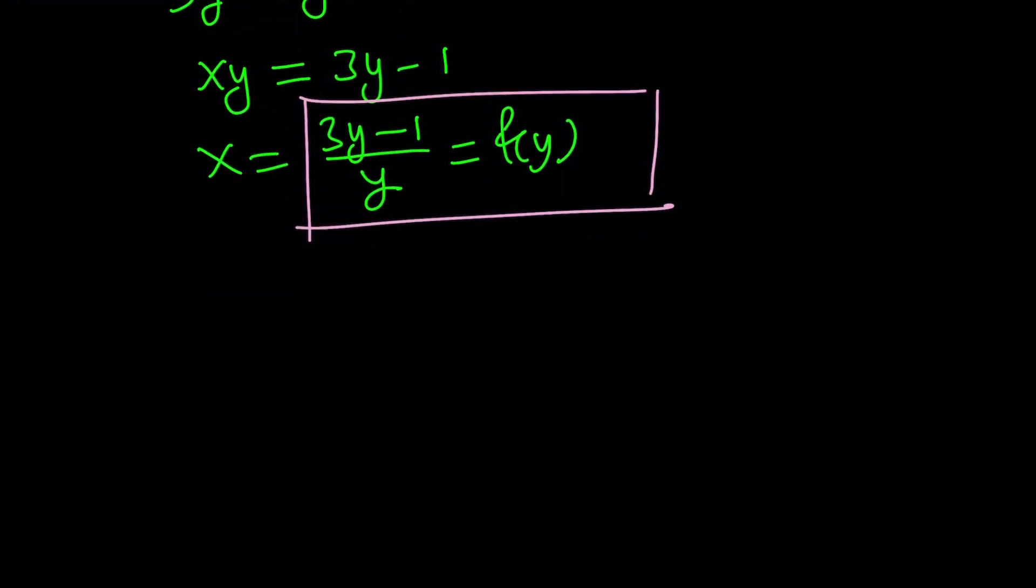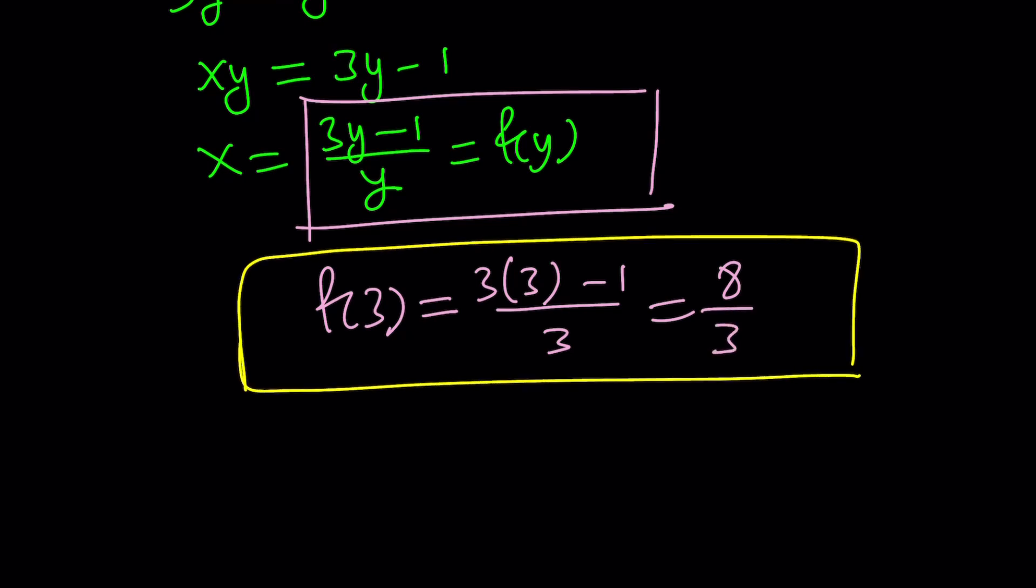So to find f of 3, all you have to do is, and not get confused by x and y because they switch roles, is to replace y with 3, 3 times 3 minus 1 over 3. So you can see, that's 9 minus 1, which is 8 thirds. Make sense? So that will be the answer. And that brings us to the end of the first method, not to the end of the video yet. So stick around.